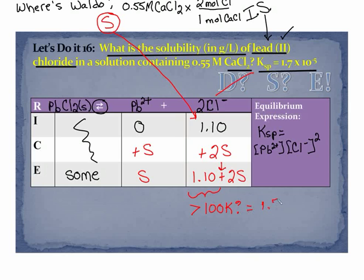So 100 times K is 1.7 times 10⁻³. Because my K value is right up here. And so since this number is greater than 100 times K, I'm going to neglect the little bit that will be added here.